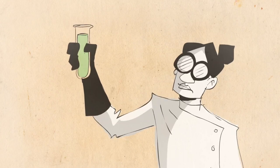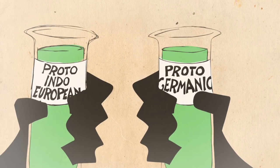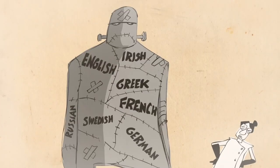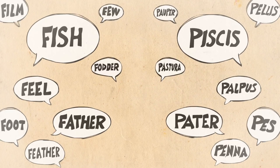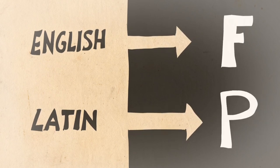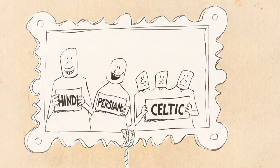We can even use the same process to go back one step further and trace the origins of Proto-Germanic to a language called Proto-Indo-European, spoken about 6,000 years ago on the Pontic Steppe in modern-day Ukraine and Russia. This is the reconstructed ancestor of the Indo-European family that includes nearly all languages historically spoken in Europe, as well as large parts of Southern and Western Asia. Comparing English with Latin, we see that English has T where Latin has D, and F where Latin has P at the start of words. Some of English's more distant relatives include Hindi, Persian, and the Celtic languages it displaced in what is now Britain.